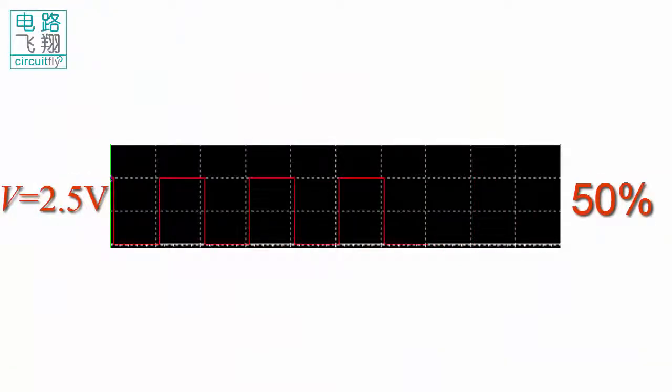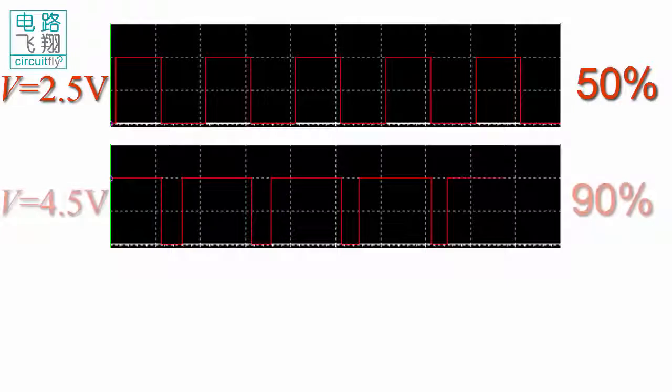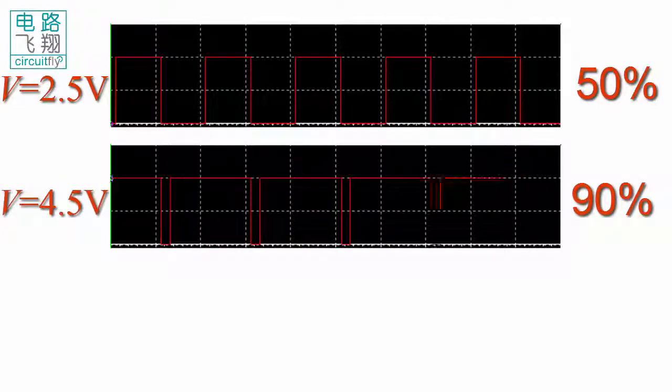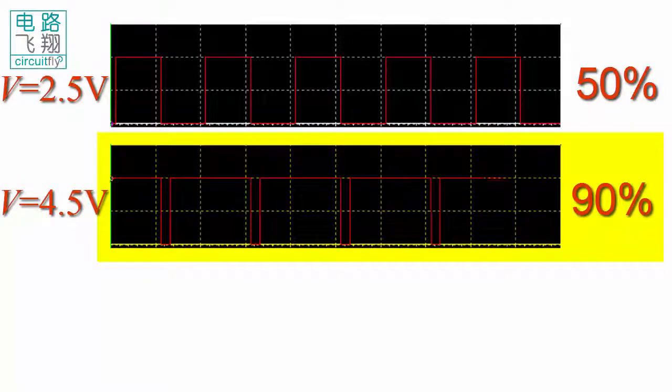这是一个矩形波信号。This is a square wave. 现在增加信号的高电平时间，脉宽变大，平均电压变大。The on-time, or the pulse width, is now increasing. Analog voltage increases accordingly.